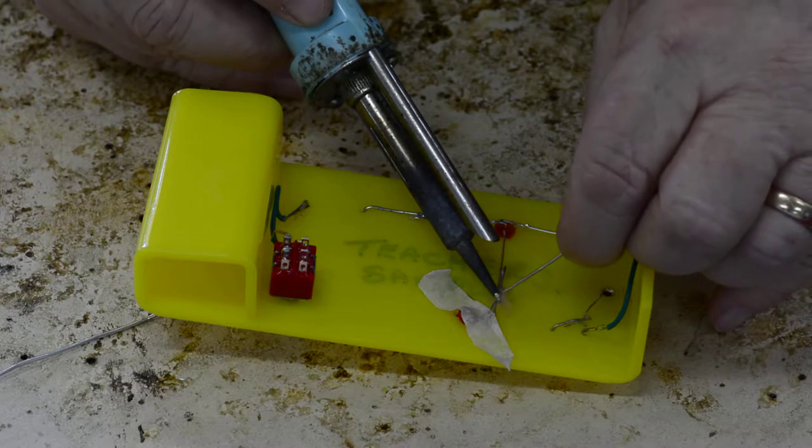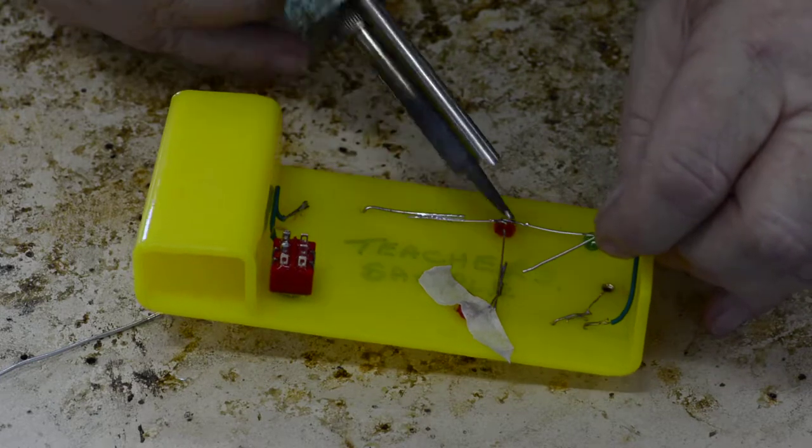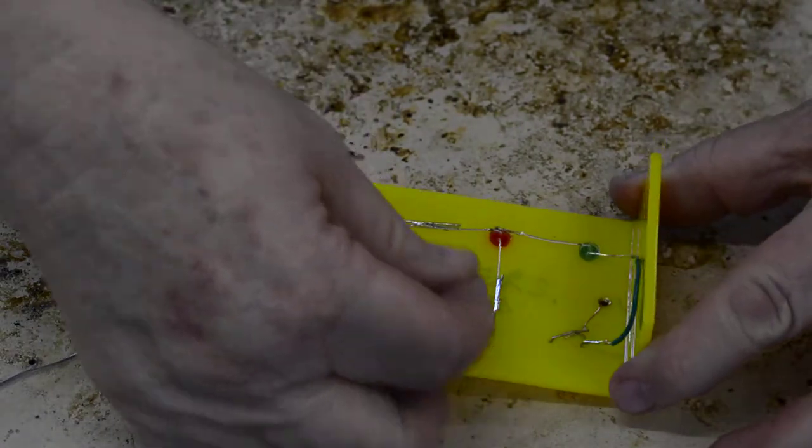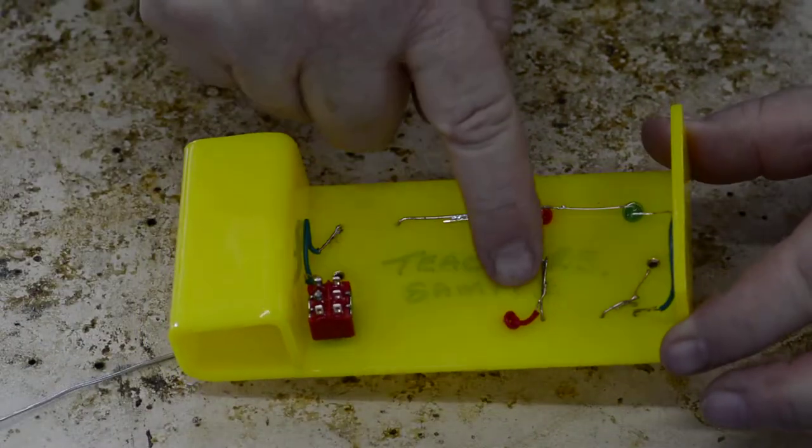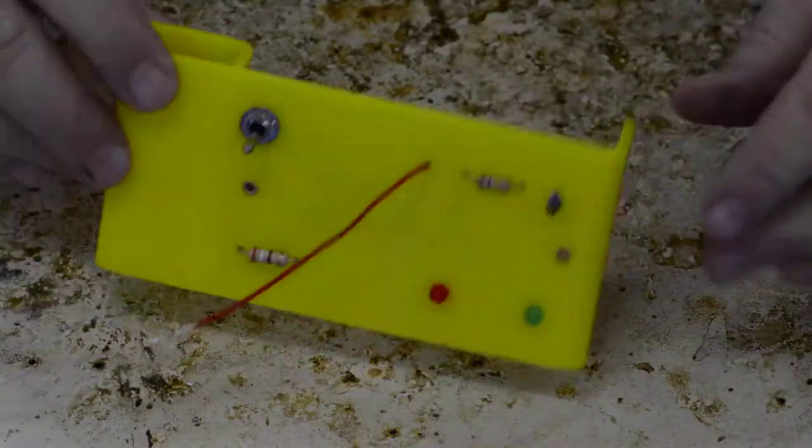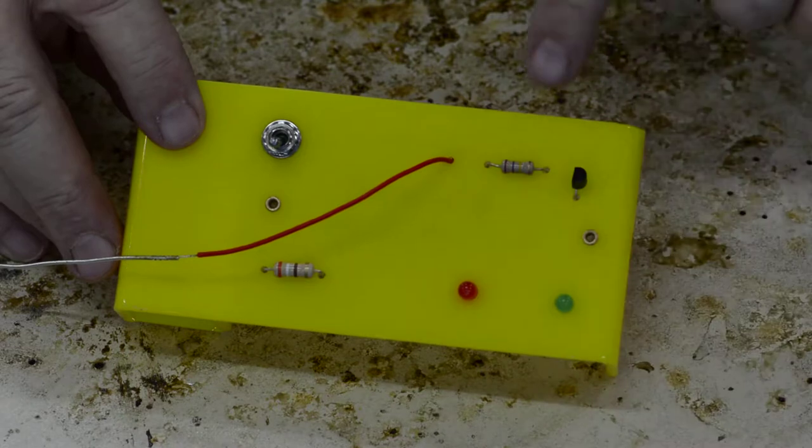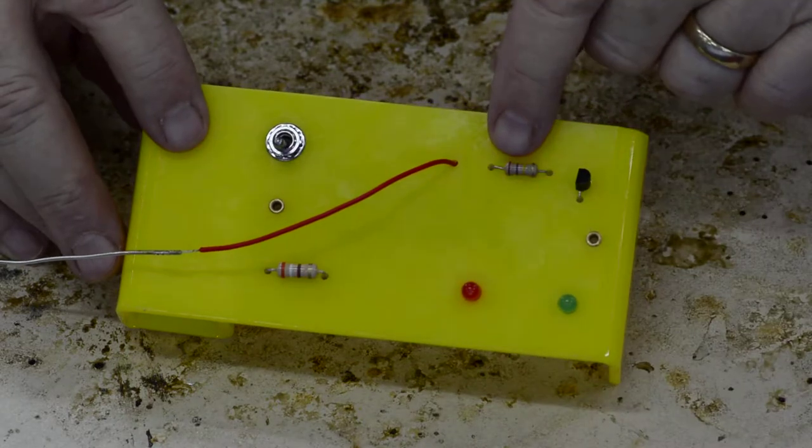Have to lay our soldering iron on it, on both of them, and then add a little bit of solder. That wire is now joined onto that, which is joined to your red LED light and your 270-ohm resistor.